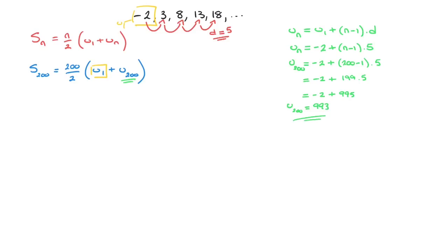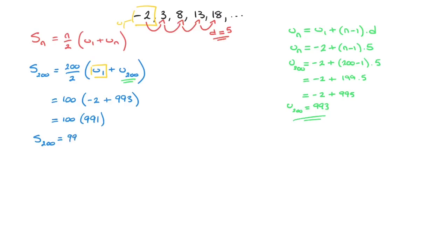Now that we have the 200th term, we go back to calculating the sum of the first 200 terms: S200 = 100 times (u1 + u200) = 100 times (−2 + 993) = 100 times 991 = 99,100. So the sum of the first 200 terms of this sequence is 99,100.